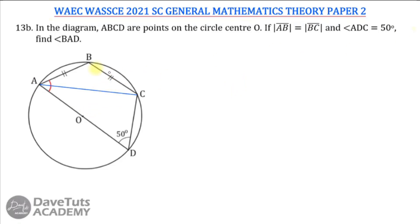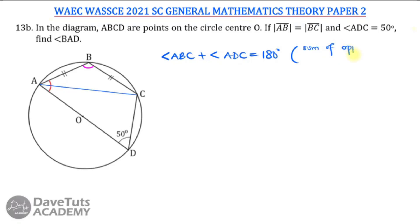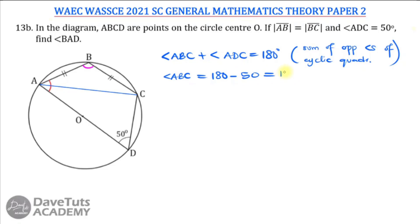First, we want to find angle ABC. We can see that angle ABC and angle ADC are opposite angles of this cyclic quadrilateral, so angle ABC plus angle ADC equals 180 degrees. Since ADC is 50 degrees, angle ABC equals 180 minus 50, which is 130 degrees.